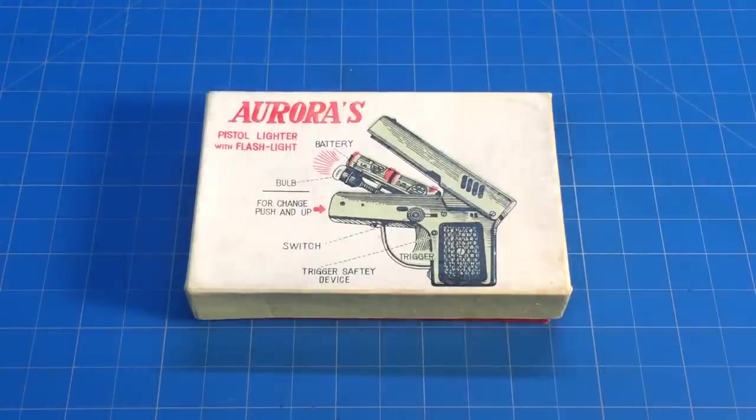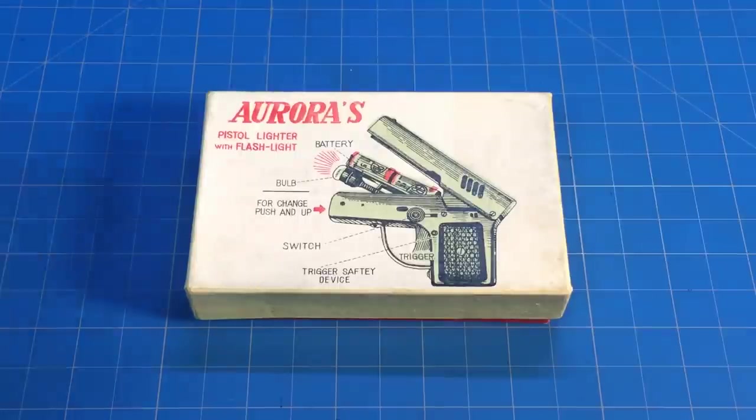Hey everyone, here's a vintage lighter review. This is the Aurora 45, a Japanese pistol lighter with a built-in flashlight. It was made in the late 1950s to early 1960s and has some pretty cool features.